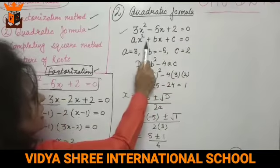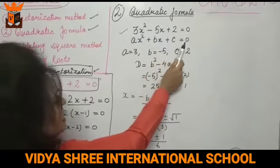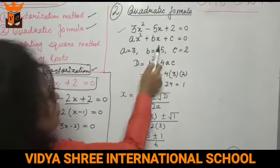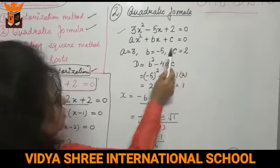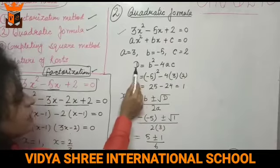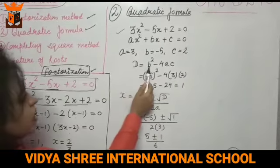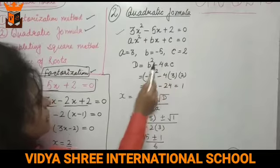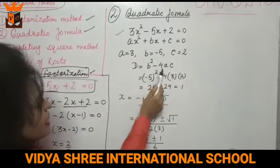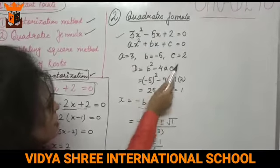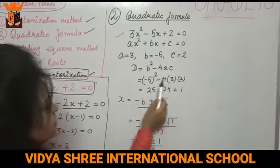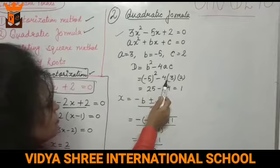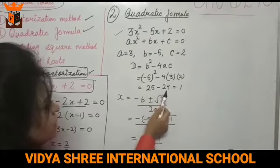The standard quadratic equation is Ax squared plus Bx plus C equals 0. So here A is 3, B is minus 5, and C is 2. The discriminant D equals B squared minus 4AC. So D equals minus 5 squared minus 4 times 3 times 2, which is 25 minus 24.